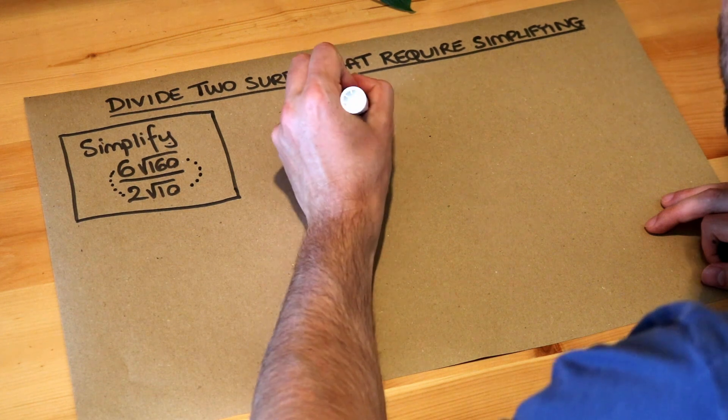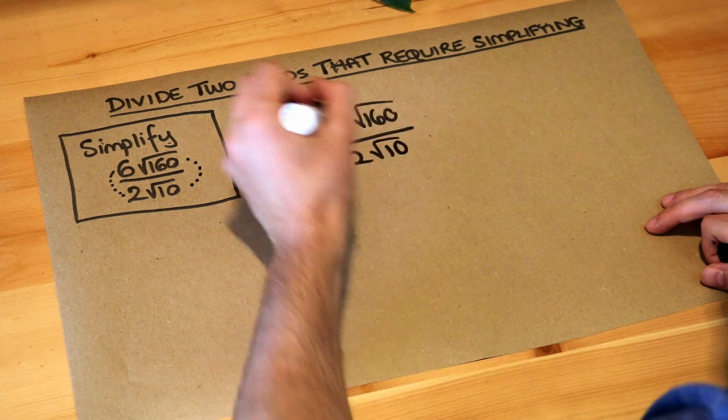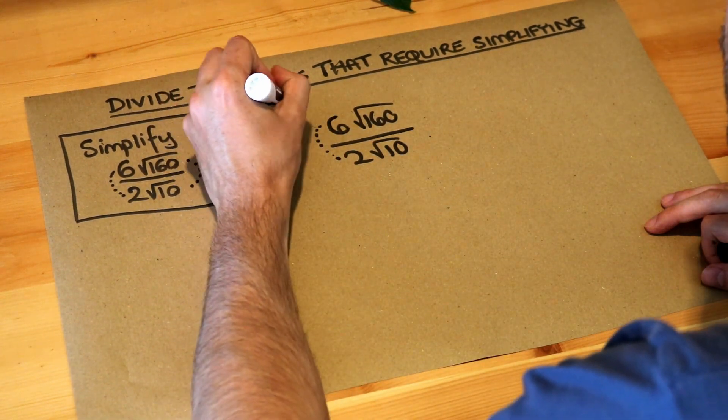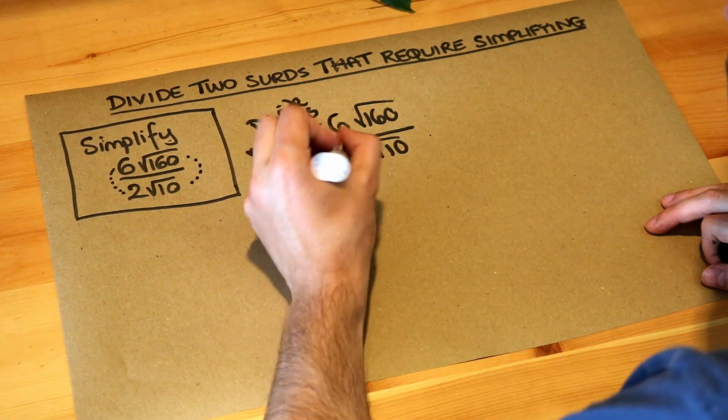So let's write this out separately. We divide the non-surds, so what's 6 over 2? Well that's just 3.